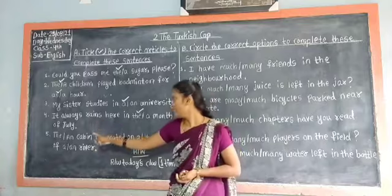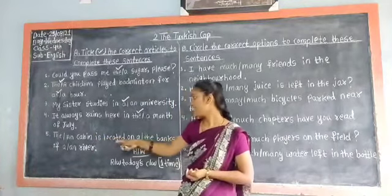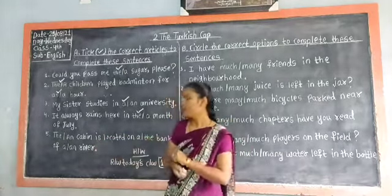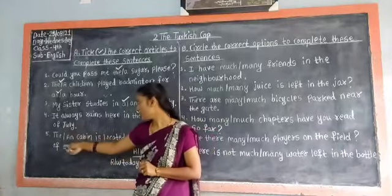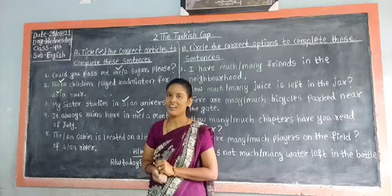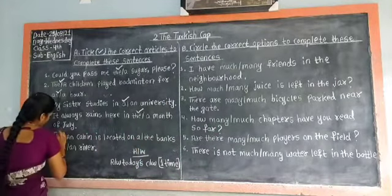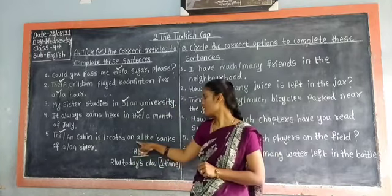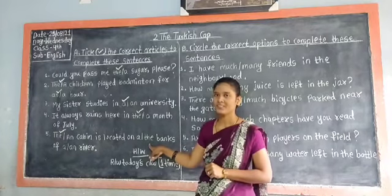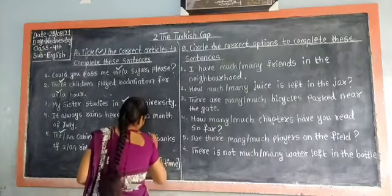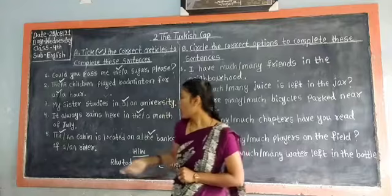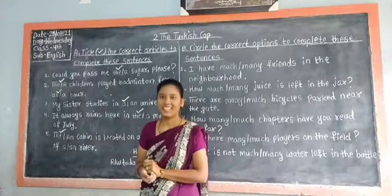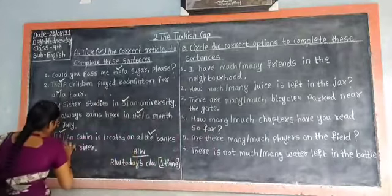Fifth sentence: the or an cabin is located on a or the banks of a or an river. For the first blank, the answer is 'the' — put tick to 'the.' The cabin is located on — for the second blank, the answer is also 'the.' For the final blank, the answer is 'a' — put tick to the article 'a.'